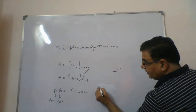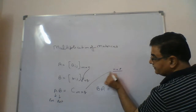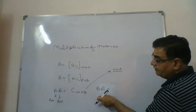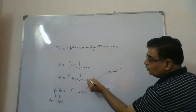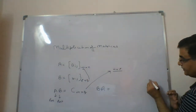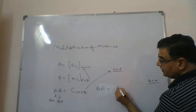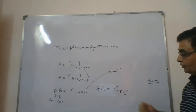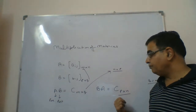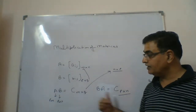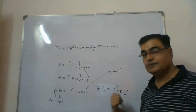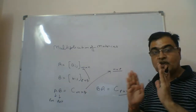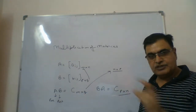Now if instead we calculate B×A, then B becomes the pre-multiplier and A becomes the post-multiplier. In this case, q must equal m, and the new matrix C will have order p×n. So AB gives order m×q and BA gives order p×n — are they the same? No. So AB is not necessarily equal to BA. In a few cases it can be, such as when both are 2×2, but this is not a general condition.